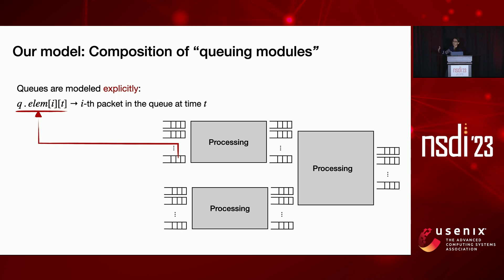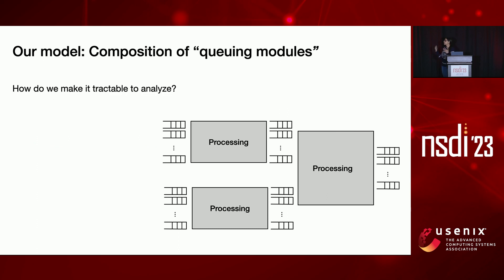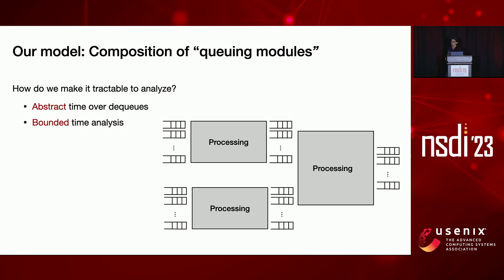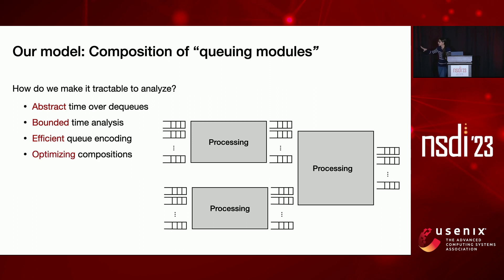With that explicit modeling and all these components interacting, we ended up with a lot of variables and constraints, so we had to do some optimizations. First, we abstract time — we don't use wall clock time; instead, abstract time progresses when a dequeue happens. We also do bounded time analysis, looking at the behavior of queuing modules over a bounded number of dequeues. And we did a lot of work on efficiently encoding the behavior of the queues and how modules are composed.